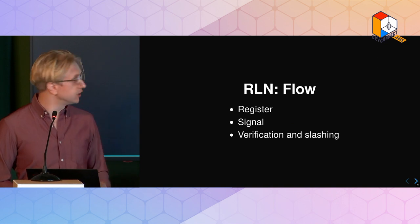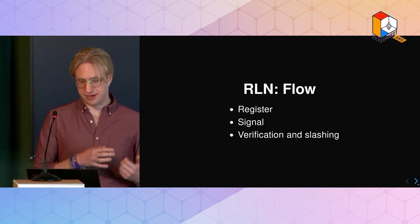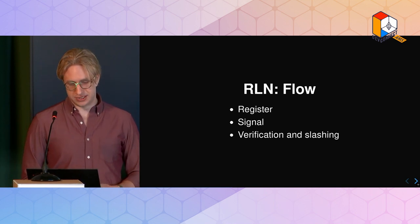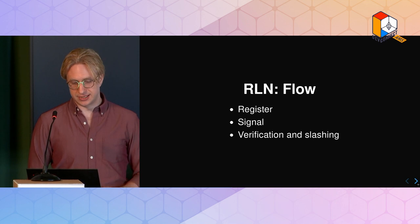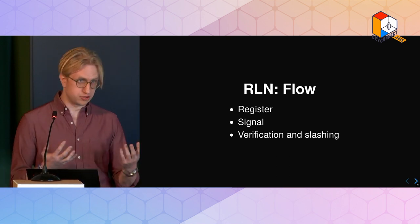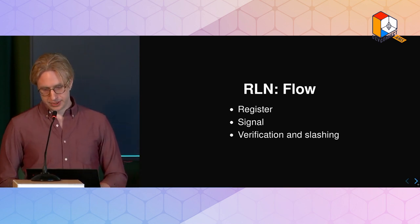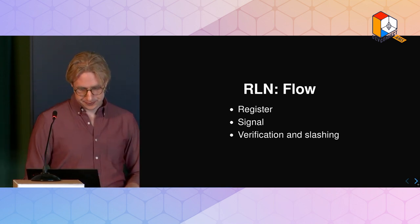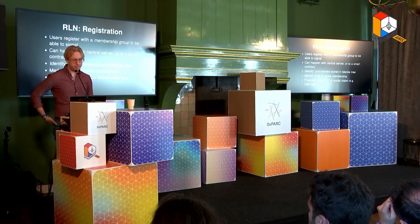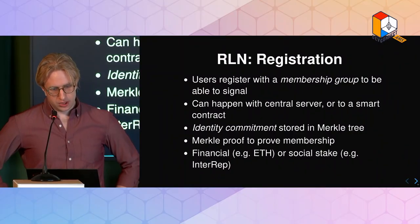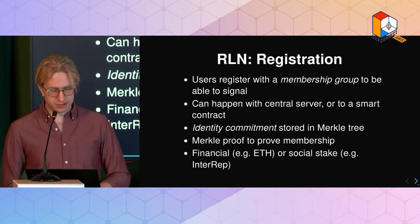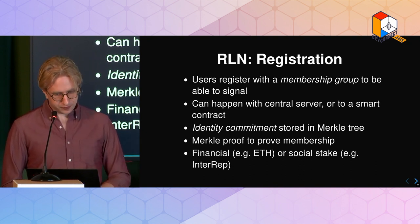Looking at how the construction works - there are basically three steps. The first is a registration process where you register to some kind of group. Then there's signaling, and finally verification and slashing. Registration is based on some kind of capital at risk, which can be either economic or social capital, like we've seen with Interrep. If you double signal, you get slashed. Registration uses a membership group in order to be able to signal - this can happen with a central server or a smart contract. You have an identity commitment - same idea as Semaphore - stored in a Merkle tree.